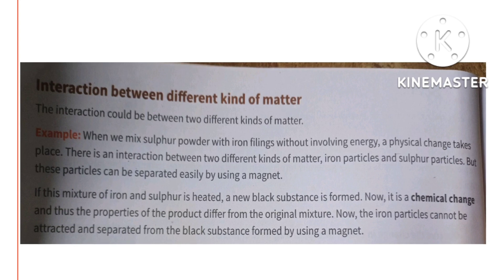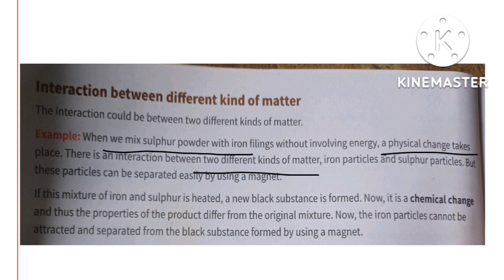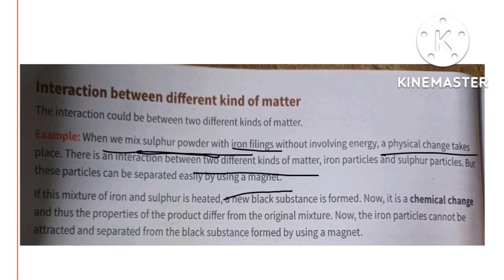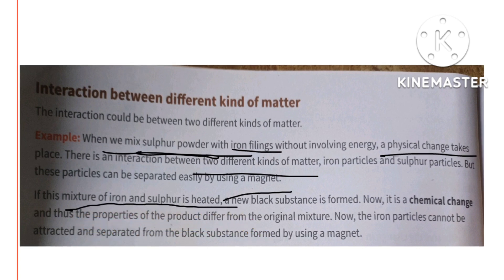For example, when we mix sulfur powder with iron fillings without involving energy, a physical change takes place. There is an interaction between two different kinds of matter — sulfur powder and iron fillings — but these particles can be separated easily using a magnet, because magnets attract iron particles. However, if this mixture of iron and sulfur is heated, a new black substance is formed, which is a chemical change.